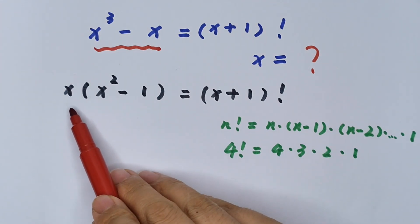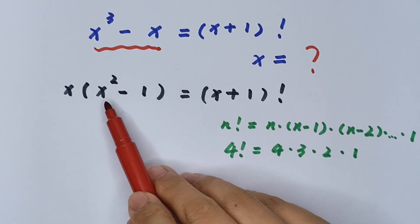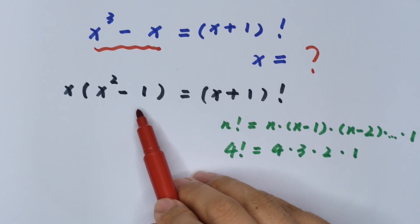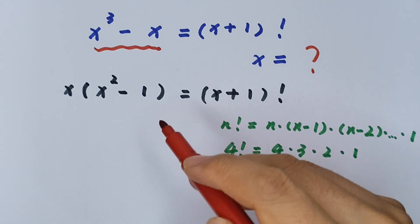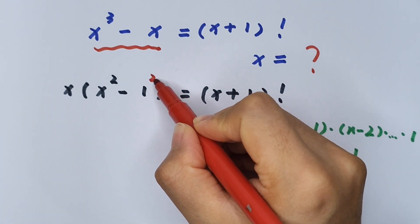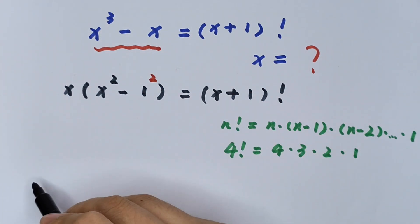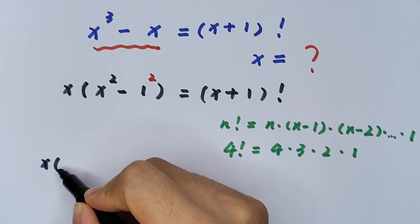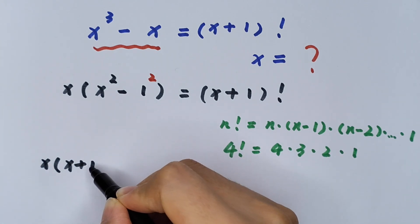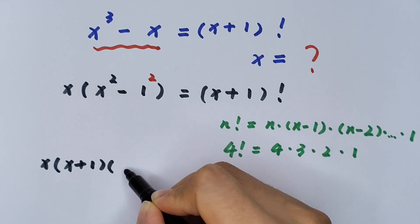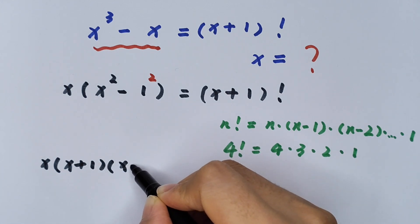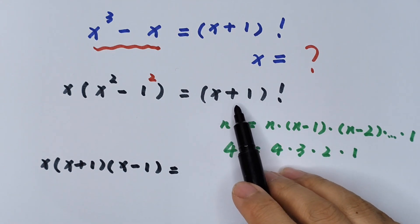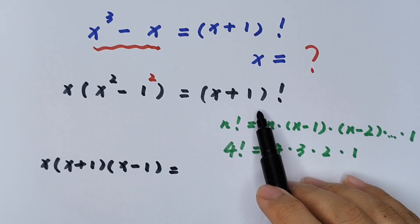Then we look at the left side: x² - 1. It factors as (x + 1)(x - 1), so we get x(x + 1)(x - 1) = (x + 1)!